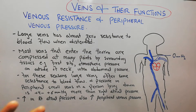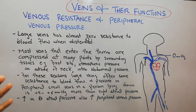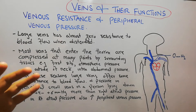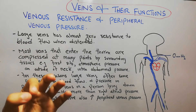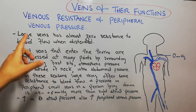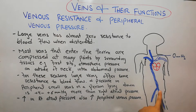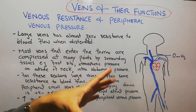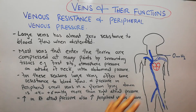What is venous resistance and what is peripheral venous pressure? We've discussed previously that when blood flows through the arteries, the blood faces some resistance due to the thick walls of the arteries. Similarly, when blood flows through the veins, it also faces a little bit of resistance, but the resistance is much lower than arterial resistance because the walls of the veins are very thin.